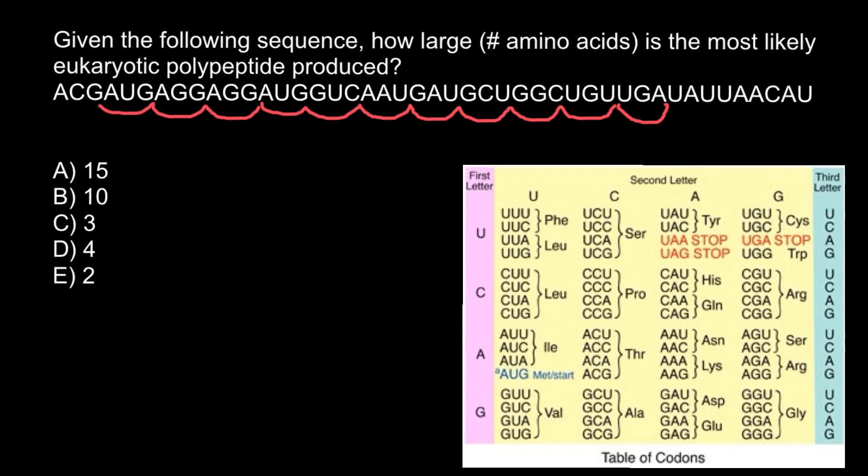...the sequence of the stop codon has to be within the same reading frame. So if you would find, for example, UGA starting from here, U-G and A, this wouldn't be within our reading frame and we can proceed searching for stop codon.